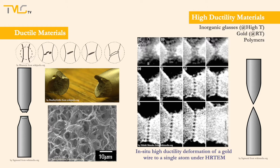Under a scanning electron microscope, the fracture surface of a ductile material shows spherical features called dimples. They are indicators of the voids formed during plastic deformation.